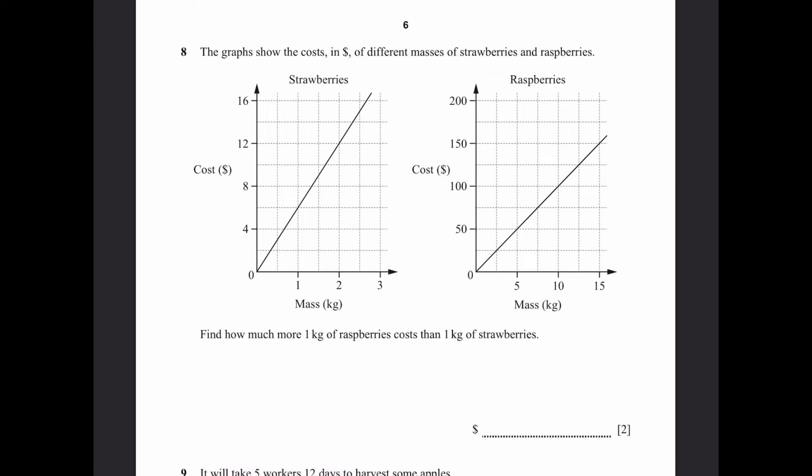Question 8. The graph shows the cost in dollars of different masses of strawberries and raspberries. Find how much more 1kg of raspberries cost than 1kg of strawberries. We can see that both are straight lines, so the mass and cost are directly proportional. The cost of 1kg of strawberries is simply $6. For raspberries, we cannot find this directly from the graph since the scale is given 5, 10, 15. But since this is a straight line, we can take the cost of 5kg and divide by 5 to get the cost of 1kg. The cost of 5kg is $50, so 1kg is 50 by 5, which is $10. The difference between the cost is 10 minus 6, which is $4.